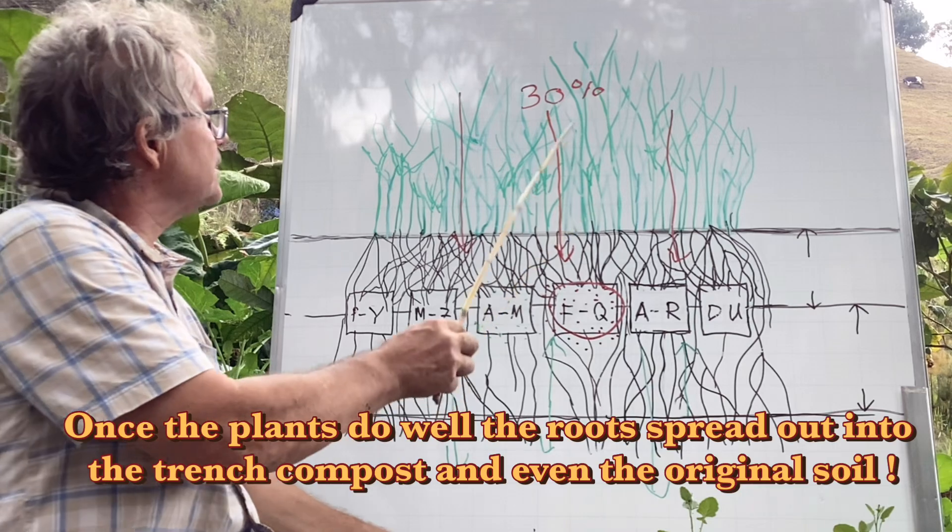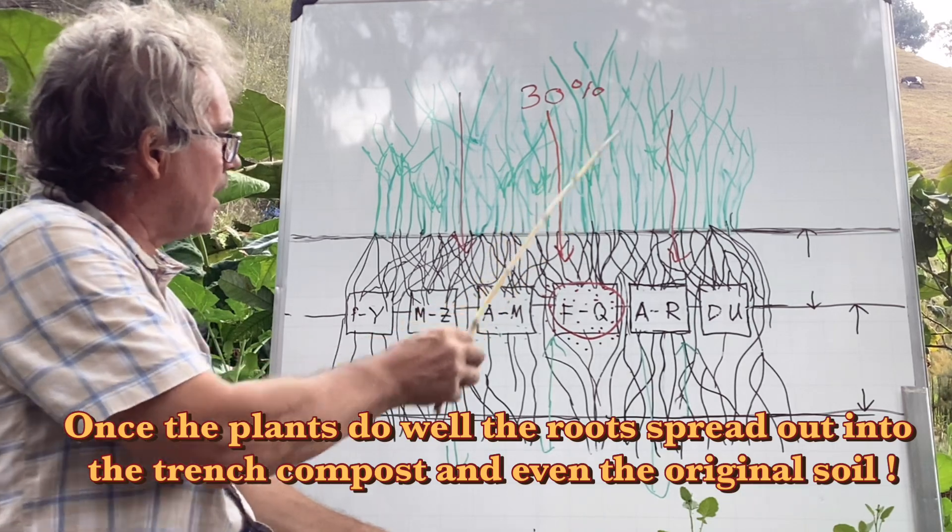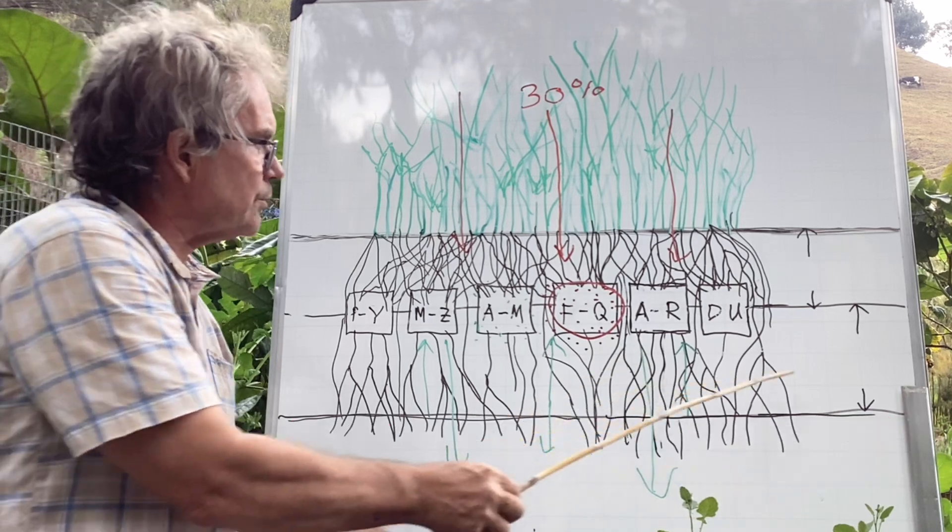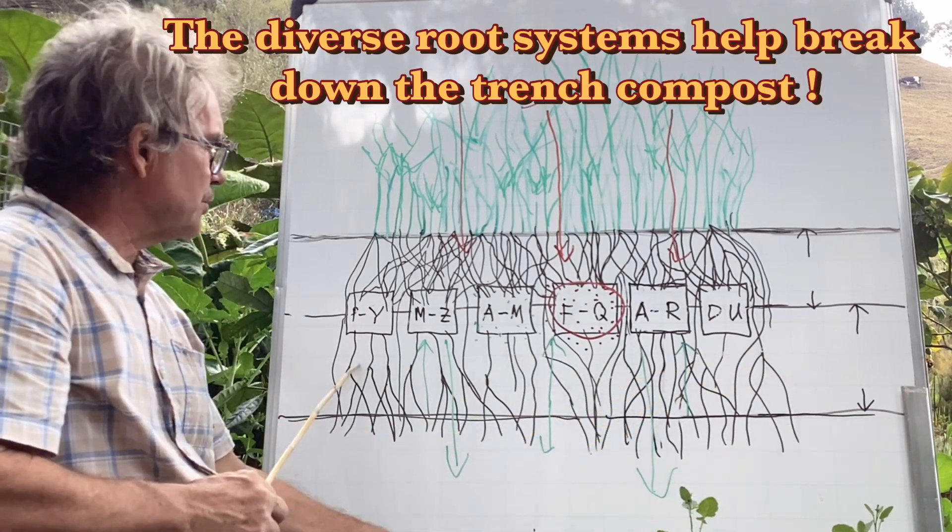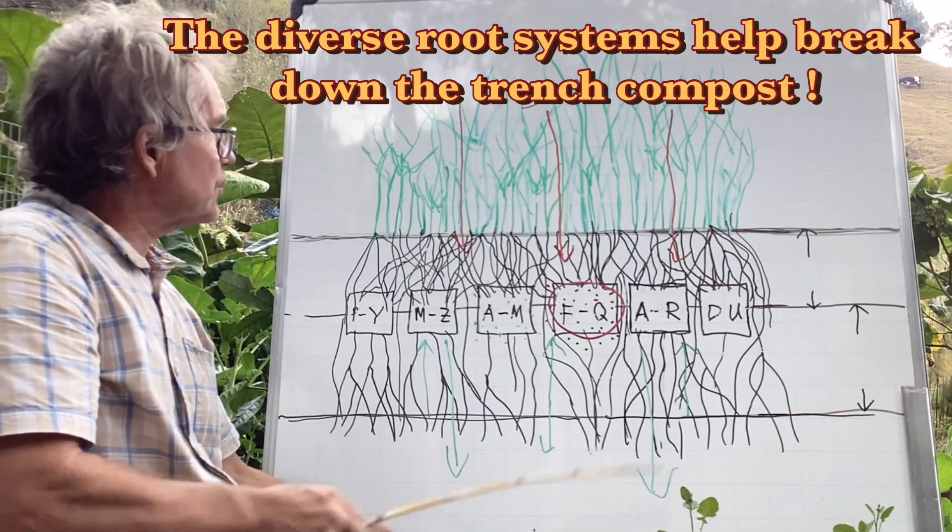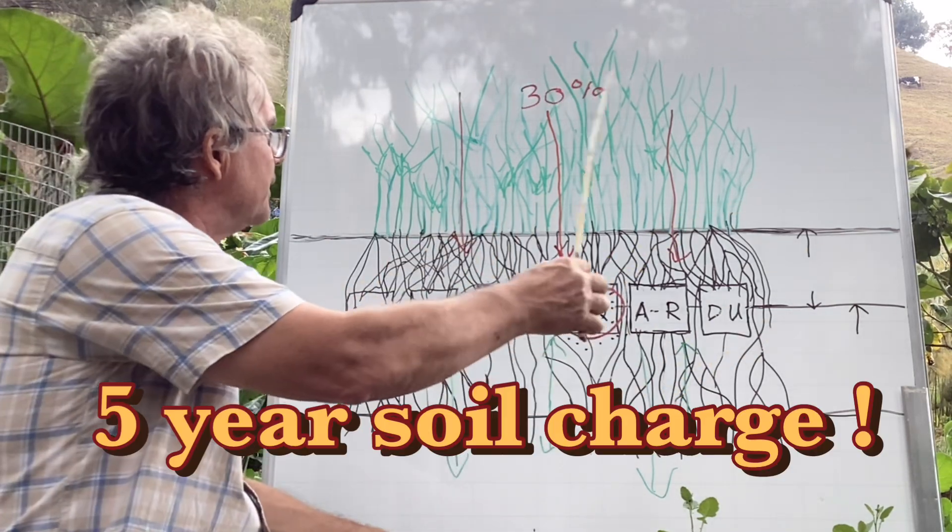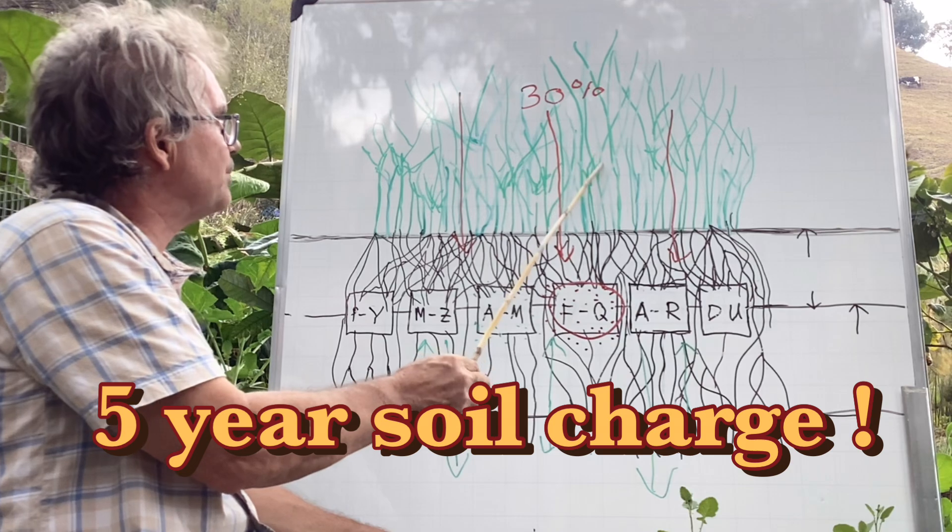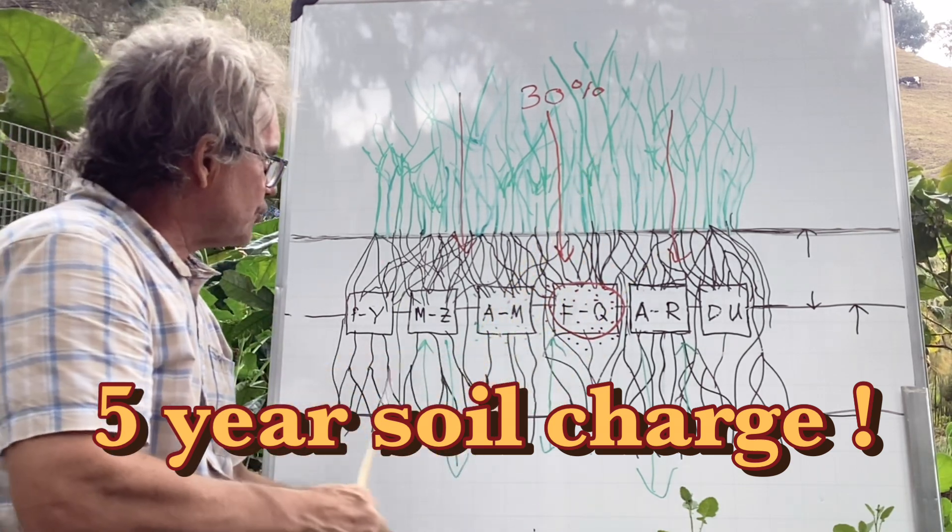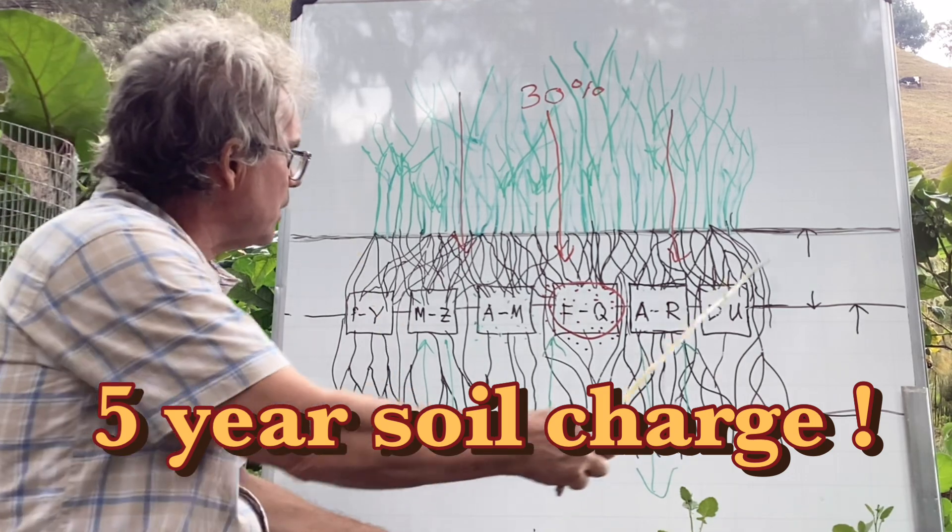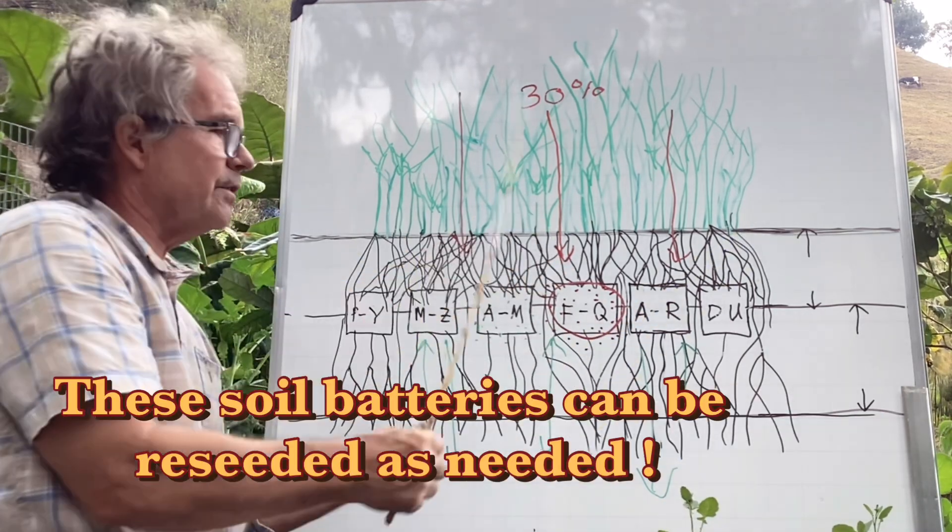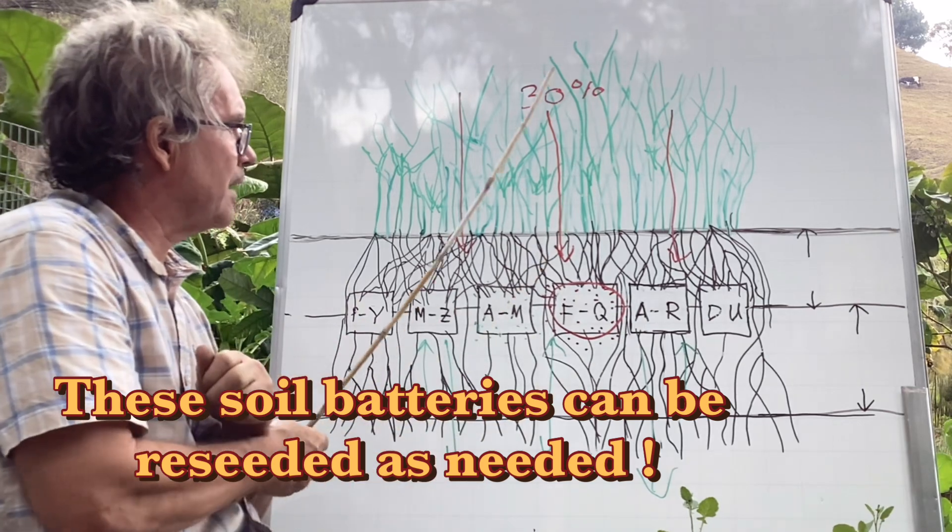Then what happens is these plants do so well they will transfer through the topsoil into this trench composting area and then eventually into the soil area. So this is a five-year plan of providing these plants with energy. The diversity and the trench composting and the original soil will keep this soil battery going for up to five years or longer.